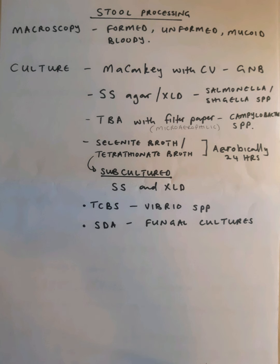We also have a broth — a selenite broth or a tetrathionate broth. This broth uses reducing agents to exclude carbon dioxide, so we culture this aerobically. After 24 hours at 37 degrees Celsius in the presence of oxygen, we then subculture on Salmonella-Shigella agar or XLD agar.